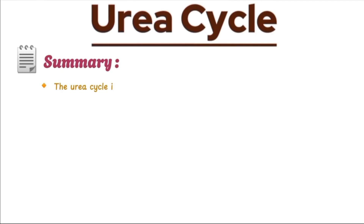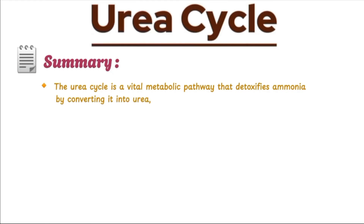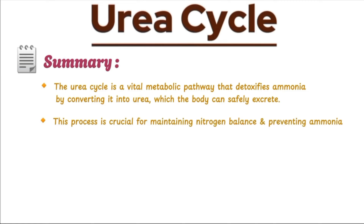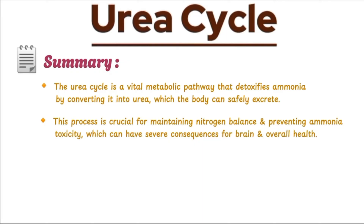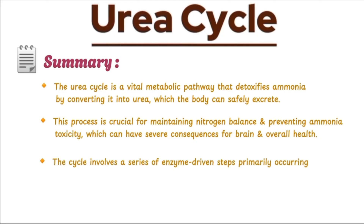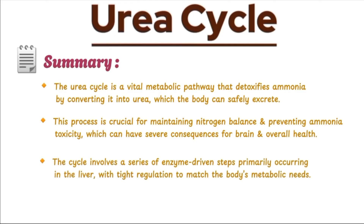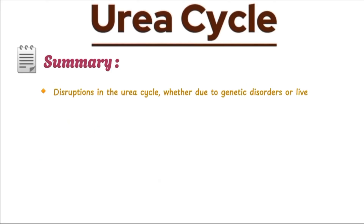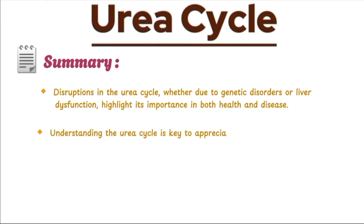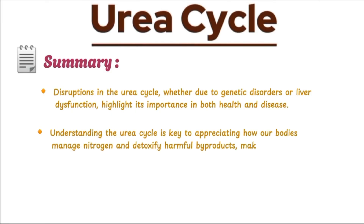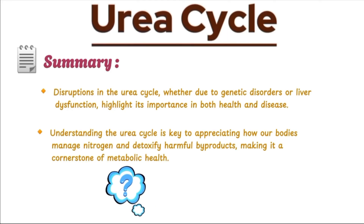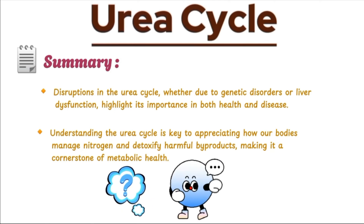In summary, the urea cycle is a vital metabolic pathway that detoxifies ammonia by converting it into urea, which the body can safely excrete. This process is crucial for maintaining nitrogen balance and preventing ammonia toxicity, which can have severe consequences for the brain and overall health. The cycle involves a series of enzyme-driven steps primarily occurring in the liver, with tight regulation to match the body's metabolic needs. Disruptions in the urea cycle, whether due to genetic disorders or liver dysfunction, highlight its importance in both health and disease. Understanding the urea cycle is key to appreciating how our bodies manage nitrogen and detoxify harmful byproducts, making it a cornerstone of metabolic health. That wraps up today's topic on the urea cycle. If you have any questions or thoughts, feel free to drop them in the comment section below, and check out the playlist for other topics related to human anatomy and physiology.